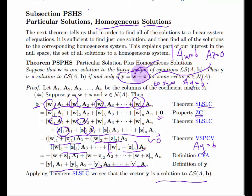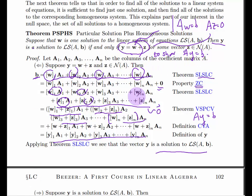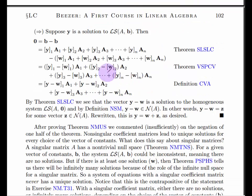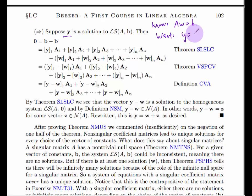That was the 'if' direction — we started with Y equal to W plus Z and showed Y is a solution. Now we go the other way: we start with the fact that Y is a solution and W is a solution, and we want to show that Y equals W plus Z for some vector Z in the null space.